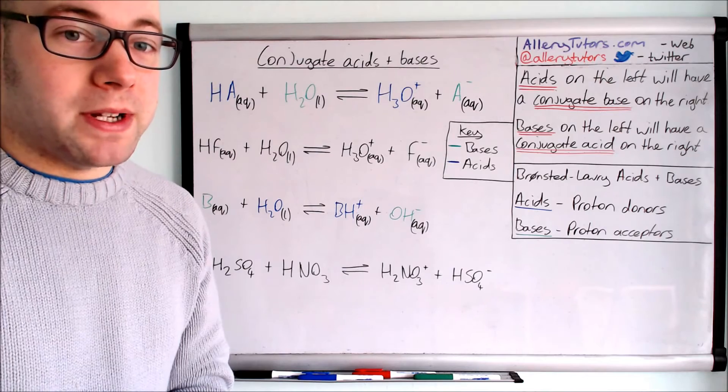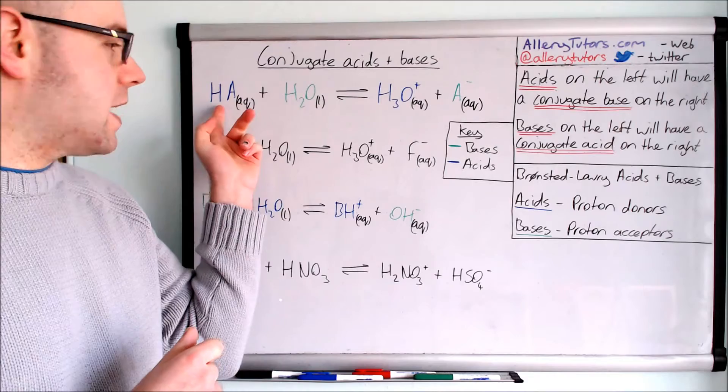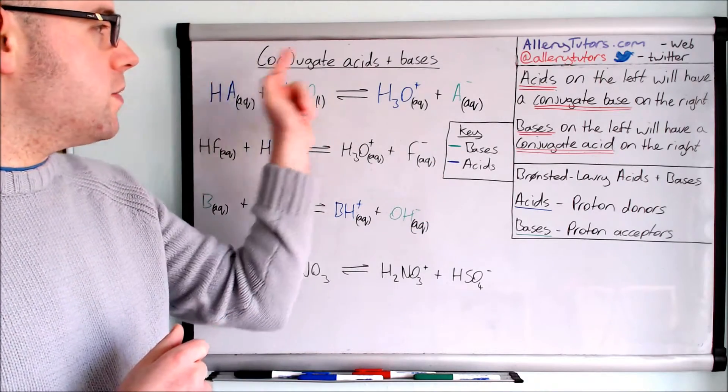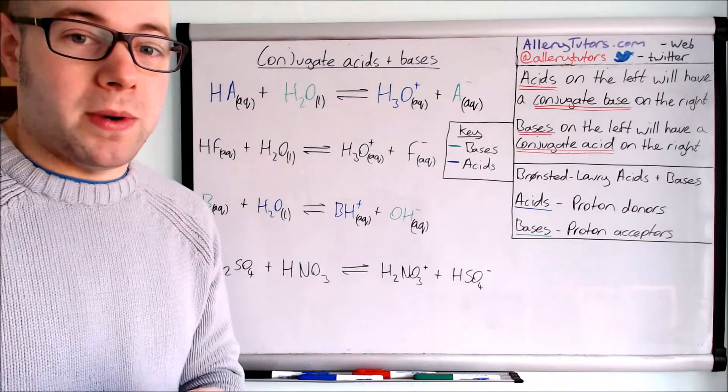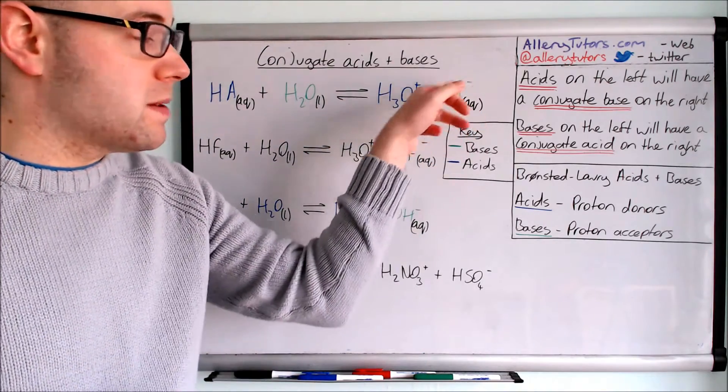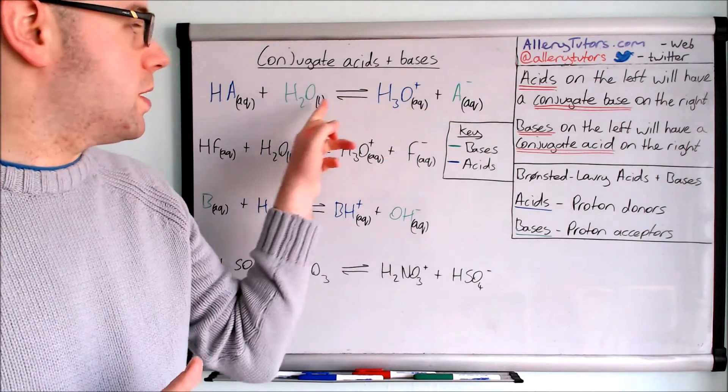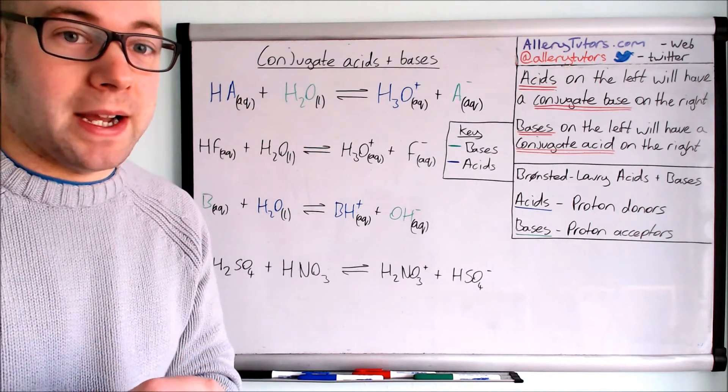Now we need to identify what the pairings are - the conjugate pairs. You can see here this is an acid because we've color coded it in blue, so this acid will give up a proton to water to form H3O+ and it will form A-. Now this is a base because this will accept a proton from H3O+ to form your HA, which is your acid back again.